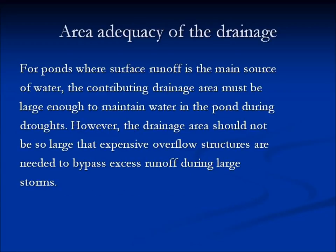For ponds where surface runoff is the main source of water, the contributing drainage area must be large enough to maintain water in the pond during droughts. We want to put the pond in an area where it will receive enough runoff to keep it full for most of the year if possible. But we also don't want to select an area that catches so much runoff that it goes around the spillways and possibly over onto your neighbor. We need to have adequate drainage while avoiding those situations.